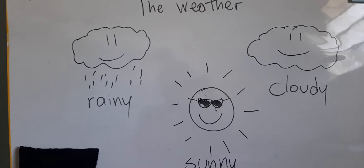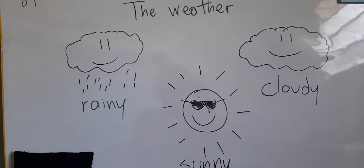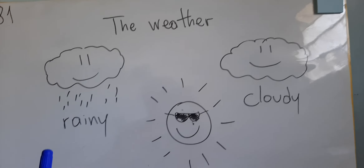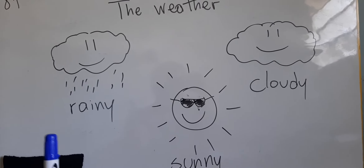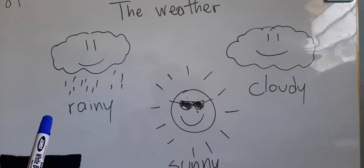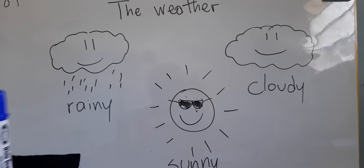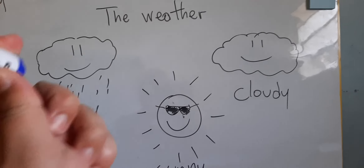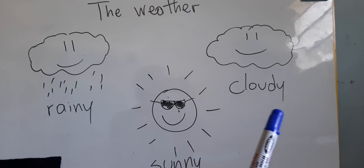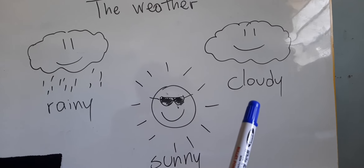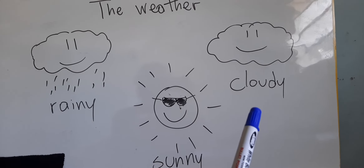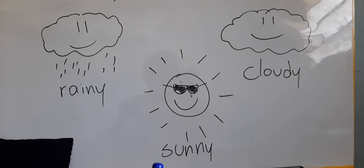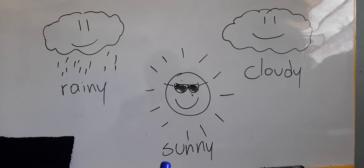Vamos a hacer, chicos, este trabajito en una hoja. Vamos a dibujar así como está en la pizarra — una nubecita con lluvia y vamos a escribir la palabra rainy. Después una nube solita, que es nublado.